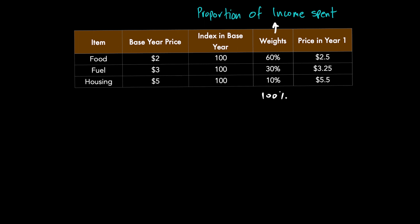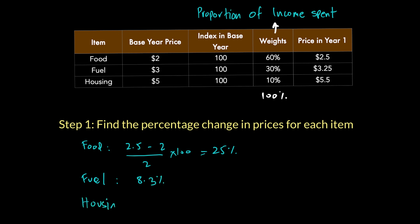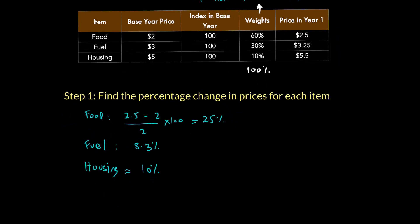The first step is to find the percentage change in price for each item. Food goes up from $2 to $2.50: percentage change = (2.50 − 2) / 2 × 100 = 25%. For fuel: (3.25 − 3) / 3 × 100 = 8.3%. For housing: (5.50 − 5) / 5 × 100 = 10%. Once we have the percentage change in prices, we calculate the weighted average.